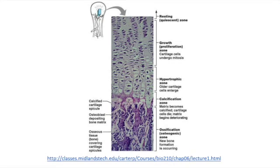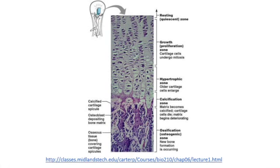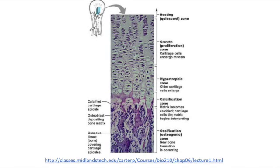The next zone is the zone of proliferation. This is where the chondrocytes undergo mitosis, or cell division. Since the cells in this area are dividing, they push the epiphyses further away from the diaphysis, and this is what lengthens the bone.